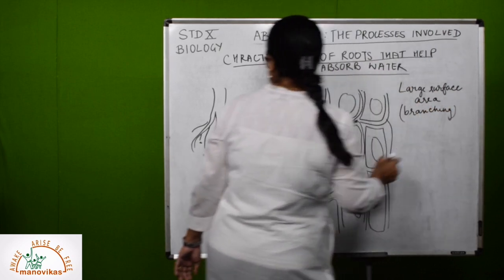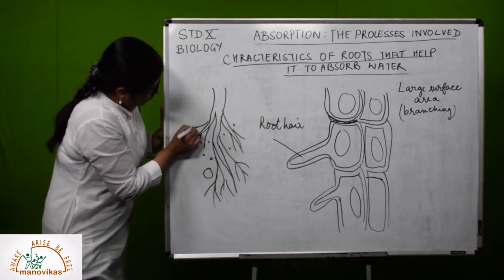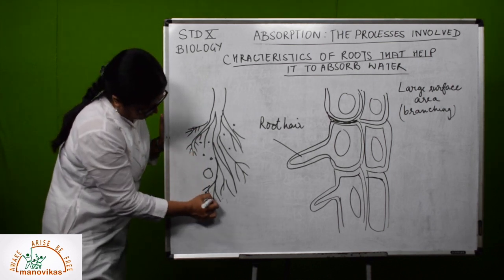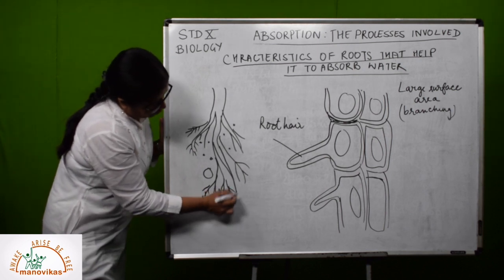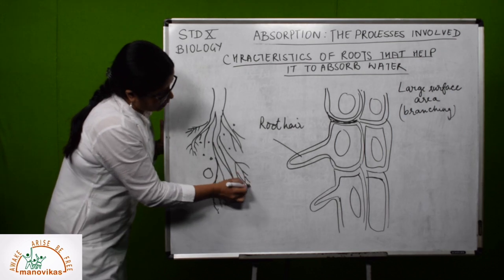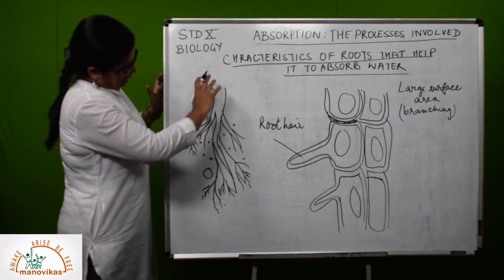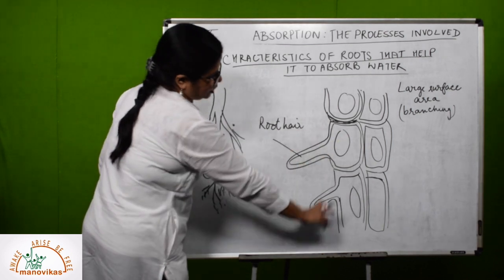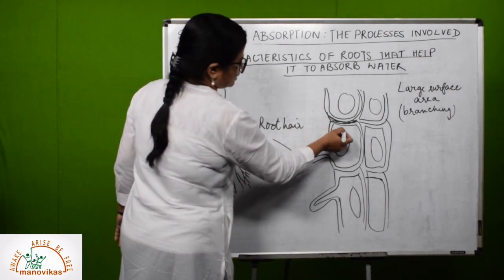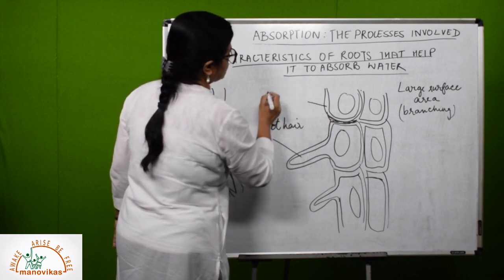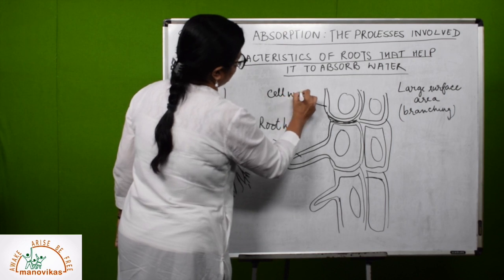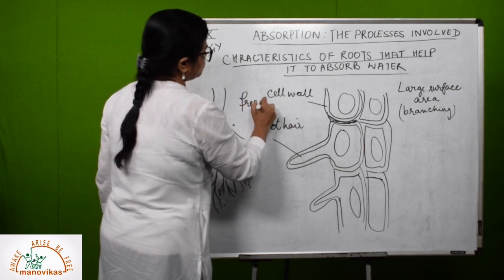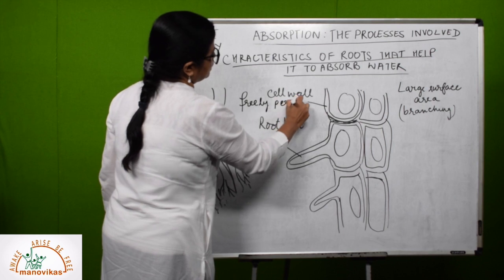So the first point is: large surface area because of its branching nature. Even these thinner roots will have many, many root hairs everywhere, so even a small plant can have a very long total root length when combined. Now looking at the enlarged diagram of the root: you can see the root hair and the vacuole (since it's a plant cell). The cell wall is thin and freely permeable — it allows water and minerals to move inside freely.